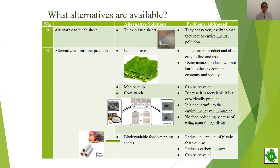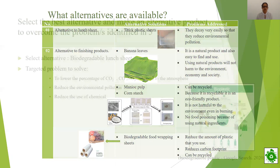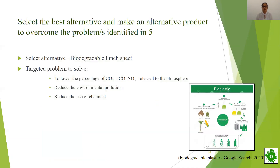The best alternative we can choose is biodegradable food wrapping sheets. By using them, we can reduce environmental pollution and also the use of chemicals. Mostly, this will lower the percentage of carbon dioxide, carbon monoxide and nitrates released into the atmosphere. Thank you. I now hand over this presentation to Sarayan.